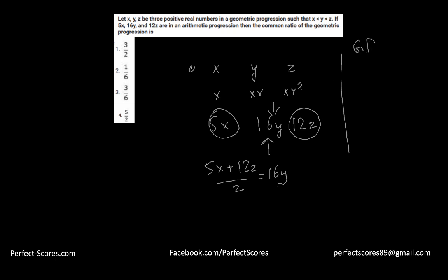So here are the things that we've used. We've used the geometric progression that the numbers are x, xr, and xr squared. The second thing that we've used is that the numbers in arithmetic progression, the average of these numbers is equal to the first number plus the last number divided by 2, and average is always the middle number. So these are the two learning objectives that we've used.